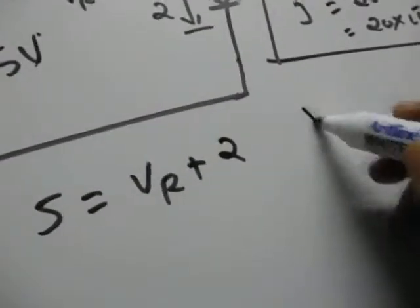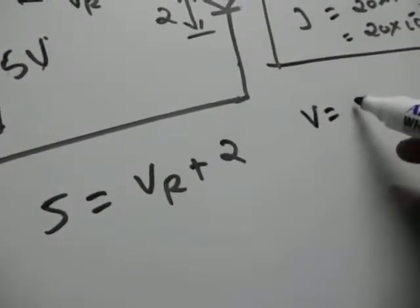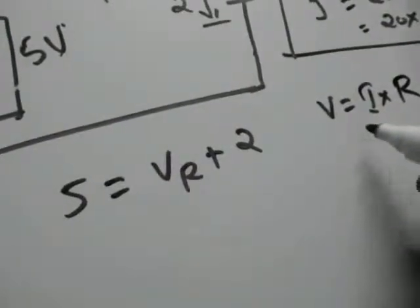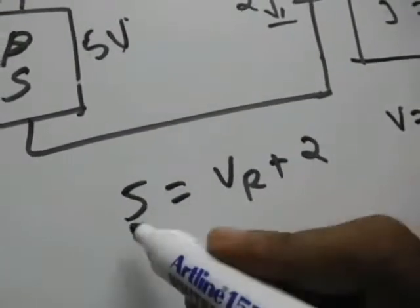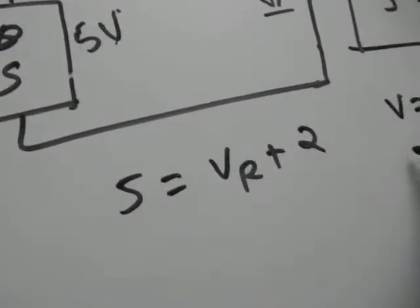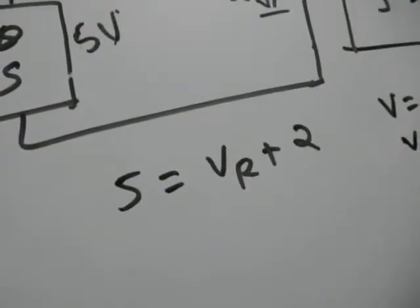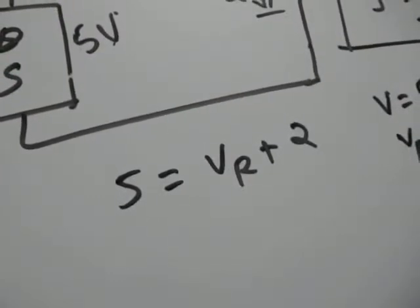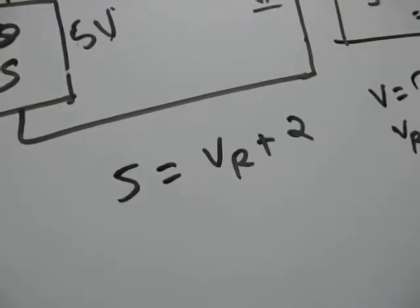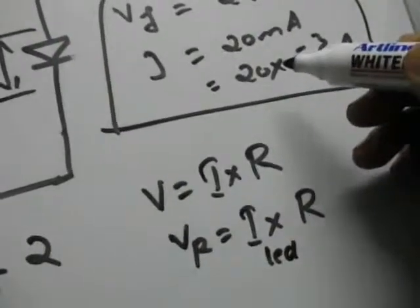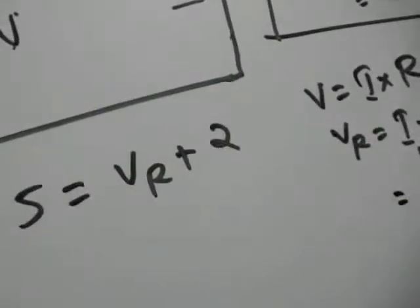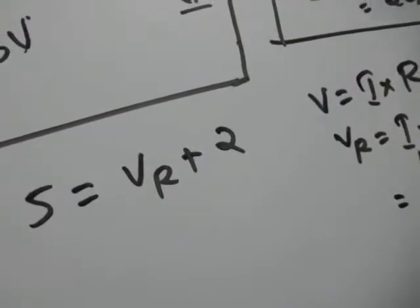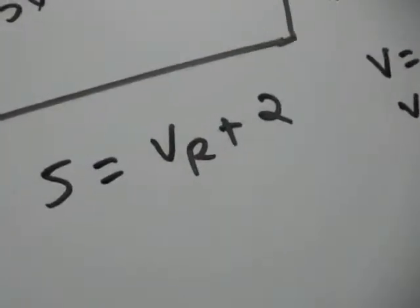We know that by Ohm's law, voltage is equal to current into resistance. We know it is 2 here, it is 5 here, and also VR. VR is equal to I into R. This I is for the LED. So we are putting LED current as 20mA which is equal to 20 into 10 raised to minus 3 into R. We will substitute it here.